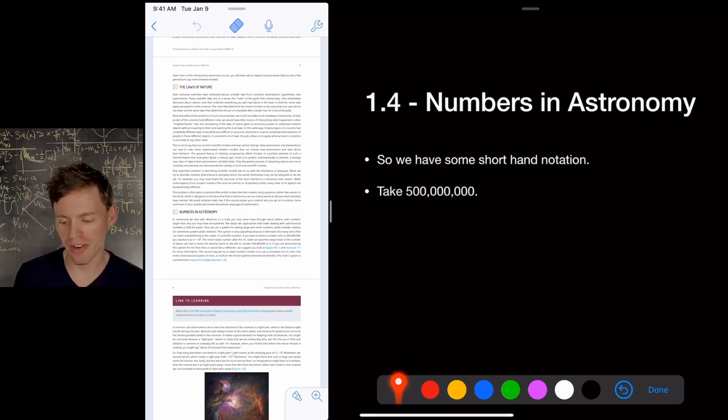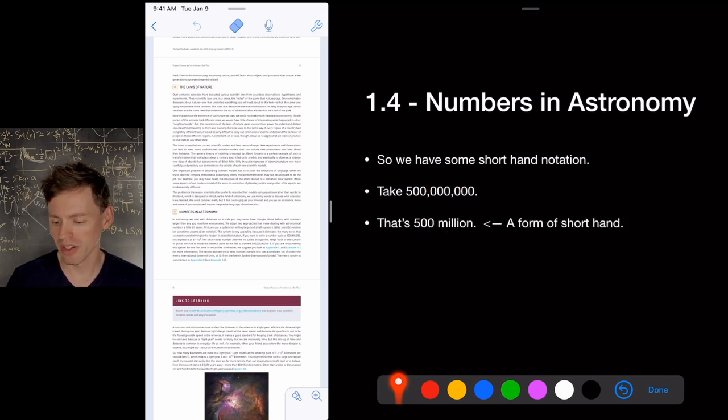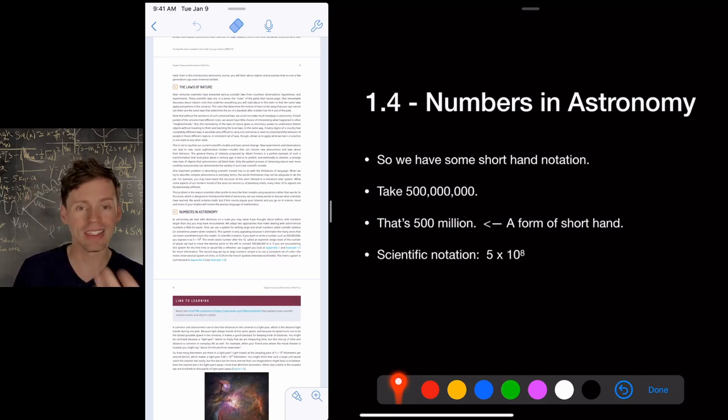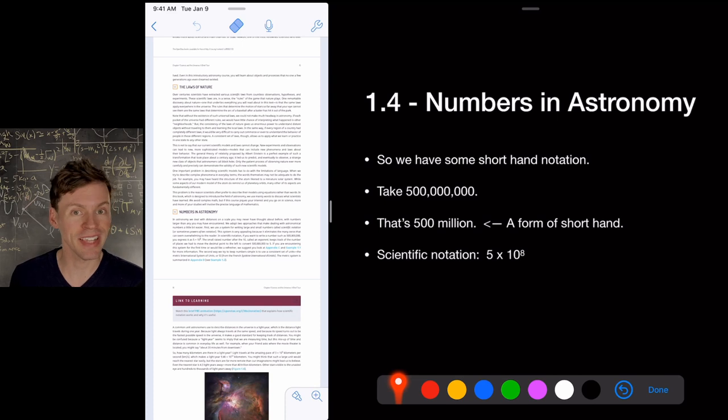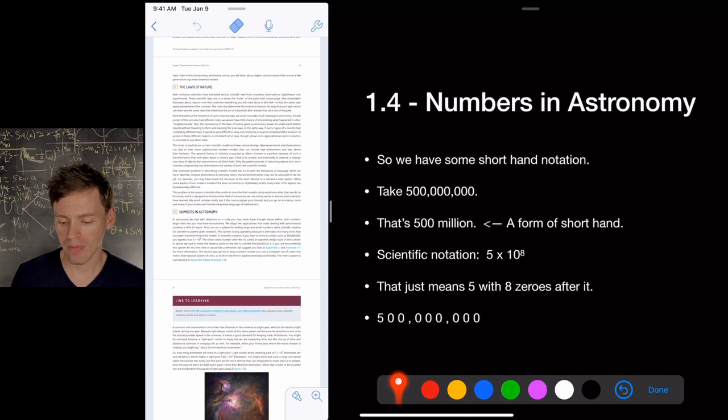For example, this number, 500 million. All right. That's a thousand. That's a million. That's 500 million. Okay. This is actually a form of shorthand. We replaced these six zeros with the word million. Okay. That's one way we can shorten numbers down. In scientific notation, we would write this as five times 10 to the eighth. And that just means five with eight zeros after it. And you could write it like this five and then one, two, three, four, five, six, seven, eight. So that's what five times 10 to the eighth means. It's just a shorthand notation.